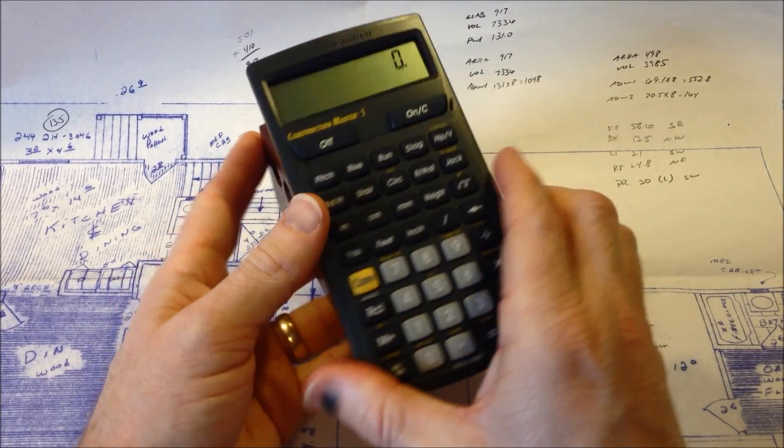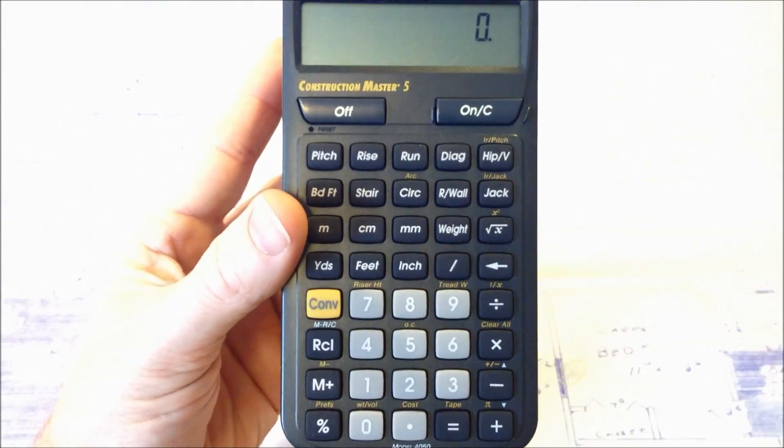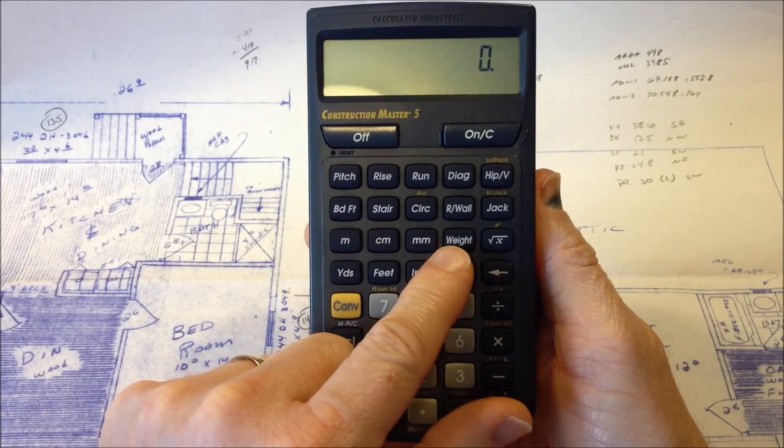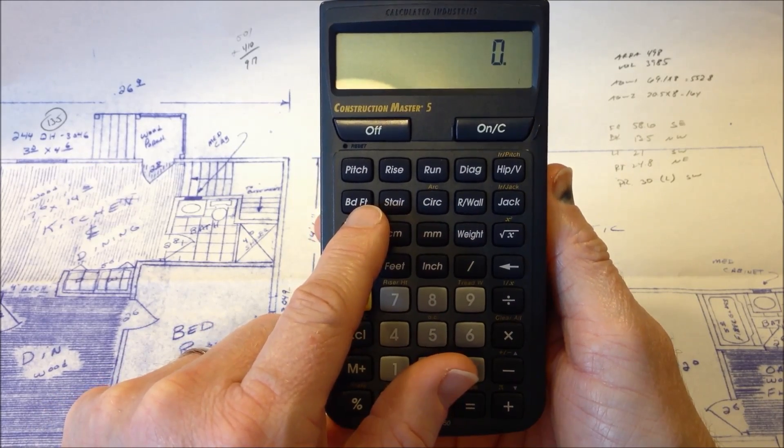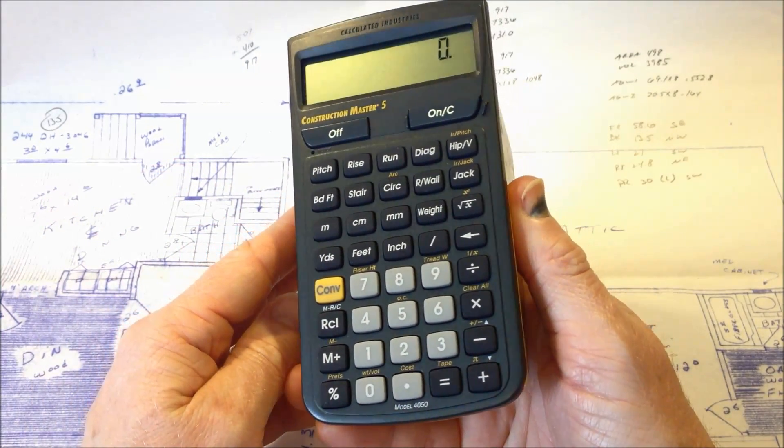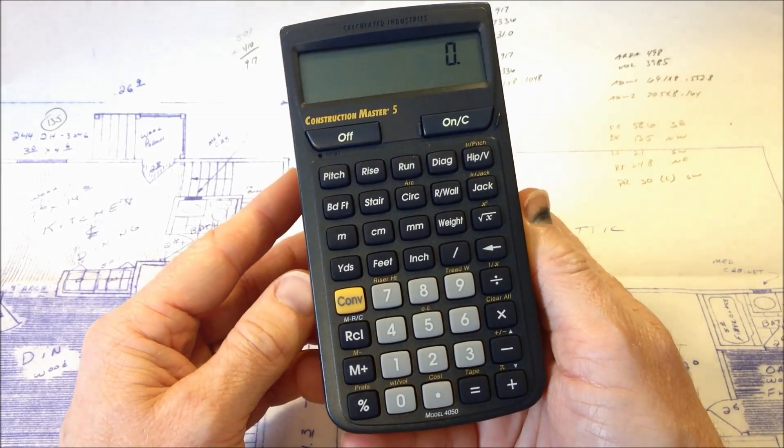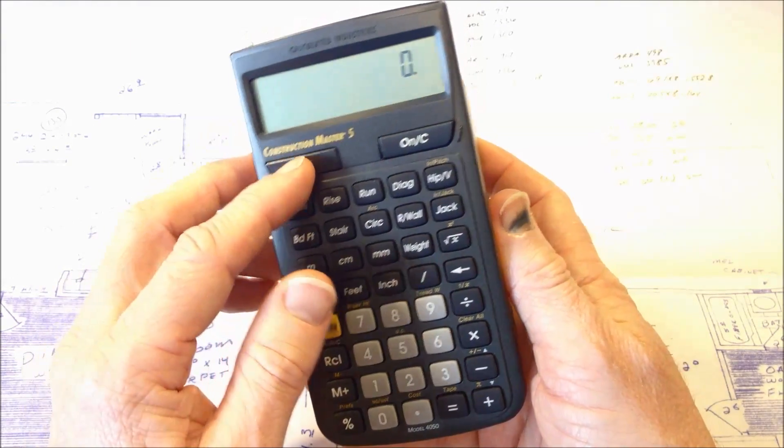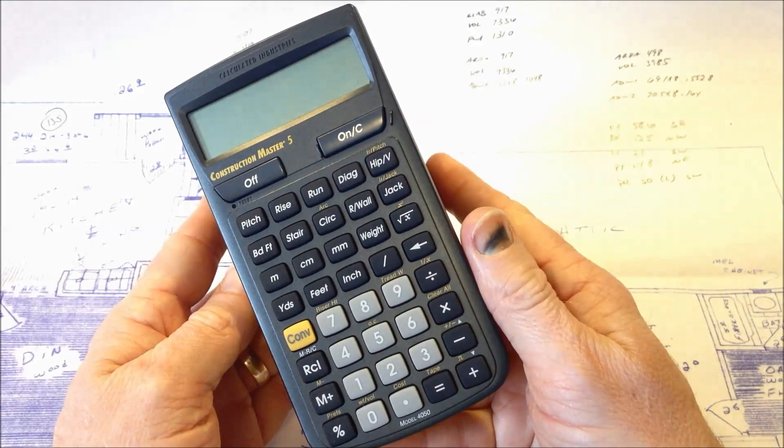The calculator will do a lot of other functions that I don't have any use for, including calculating stairs and weights. It will do the metric system conversions. We can calculate board feet and roof jack spacing and number of studs in a wall. It'll do a lot of really nice functions. So if you are in the construction trades and you would like to have a little easier calculation tool, the Construction Master 5 is just the ticket.